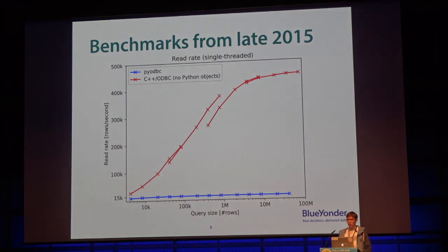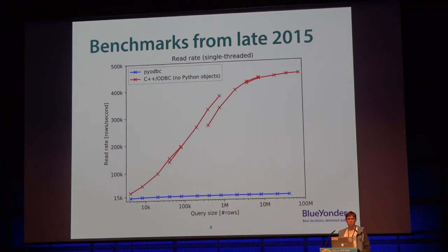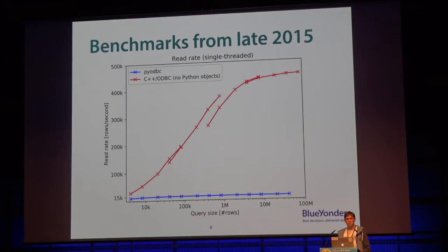So I made a few measurements — these benchmarks are from 2015. On the y-axis you see the number of rows you can read from the database per second; on the horizontal axis, the size of the result set. The blue line is the performance we had with PyODBC in Python; the red line was performance from C++ with a custom ODBC module. Granted, the C++ thing did not output Python objects, but it was tremendously faster — like a factor of 30. This got me thinking: what is taking up all the time? I know it can be fast, and it shouldn't be that hard to create a Python driver.